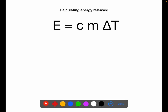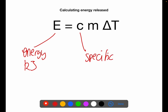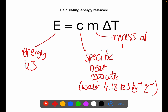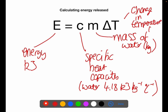We use this equation: E equals CmΔT, where E is energy in kilojoules, C is specific heat capacity — usually 4.18 kilojoules per kilogram per degree C for water, which is in your data book — m is the mass in kilograms of the water or whatever you're heating up, and ΔT is the change in temperature in degrees C, which is end minus start temperature. You need to be able to calculate any of the four variables.